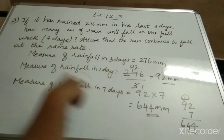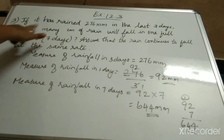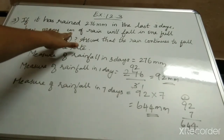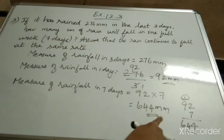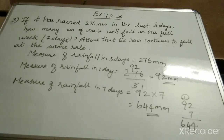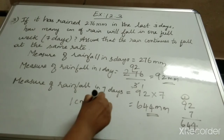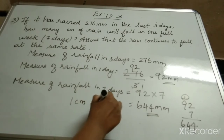Now in your question it has been asked how many cm of rain — so cm of rain. But our answer is in mm. So how can we write that in the form of cm? Now how can we write this mm in cm? We know 1 cm is equal to 10 mm.